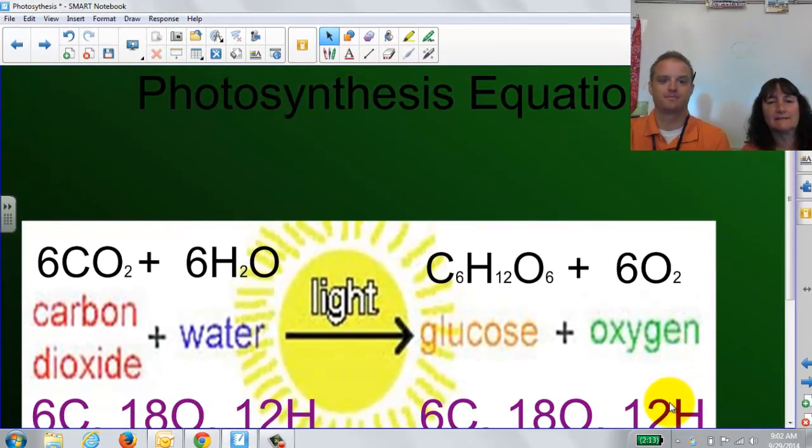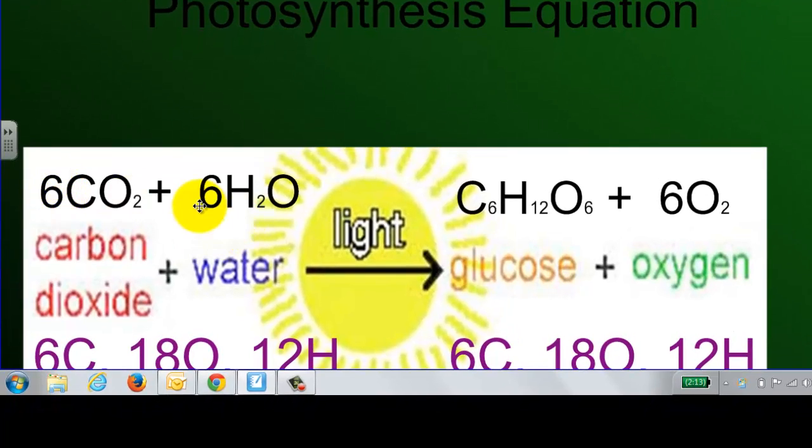That's a photosynthesis equation. And when we read chemical equations, the numbers in the front, yeah, that's 6 there, right in front of that CO2 and the H2O, that means how many molecules. So that means I need 6 carbon dioxide molecules and 6 water molecules. And then in the middle there, we've got that light. That's the light from the sun. And then that's going to produce 1 glucose molecule because there's not a number in front of that. So it's just 1 molecule. And then 6 oxygen molecules.